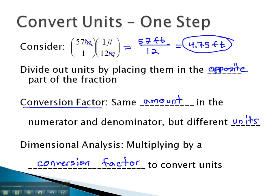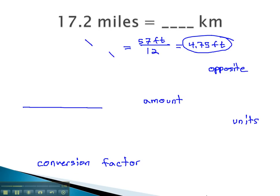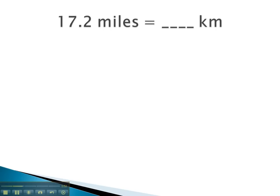So let's see if we can figure out how to create these conversion factors and convert units of measurement. For example, if we have 17.2 miles and we wanted to convert that to kilometers. Well, the first thing we need to do is take what we start with and make it into a fraction. So we'll put the 17.2 miles, be sure to use the units, over 1 so that it's a fraction.